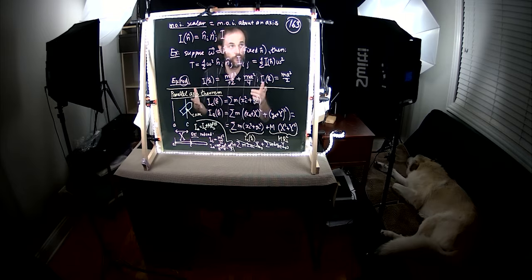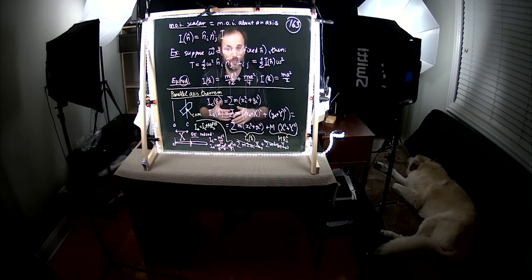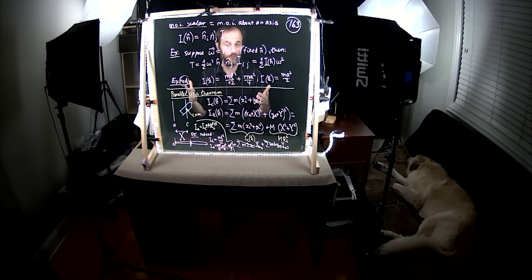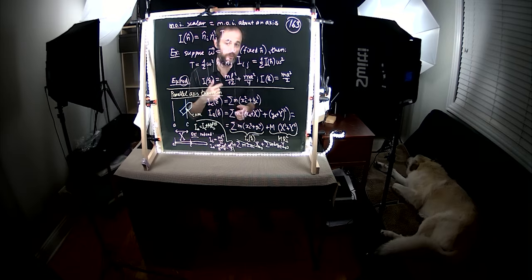That's it for part 3 of lecture 16. Once we have computed a moment of inertia about the center of mass, we can compute moment of inertia about any parallel axis by simply adding mr-perpendicular squared. Do the quiz, have fun, and I'll see you in part 4 soon.